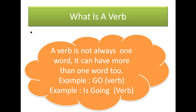A verb is not always one word — it can have more than one word too. The example below would prove me right. I have used the word 'go' and the words 'is going,' and both of them are verbs. In 'May I go,' 'go' is the action word, so 'go' is the verb. In 'He is going,' 'is going' is also an action phrase, so these are also verbs.